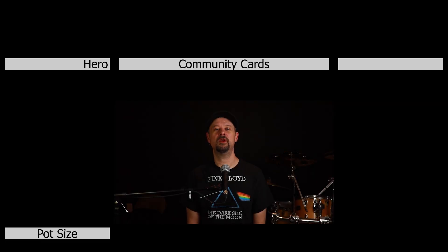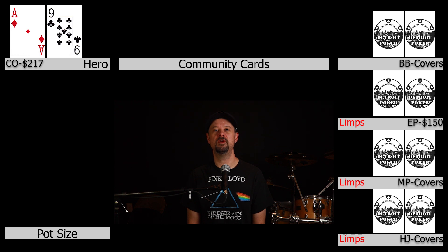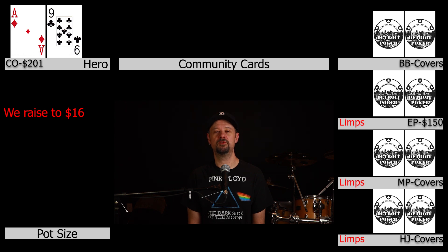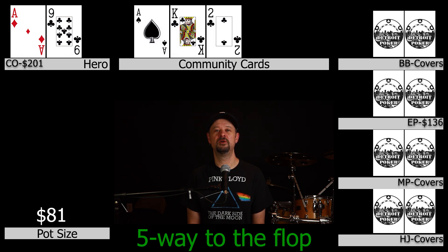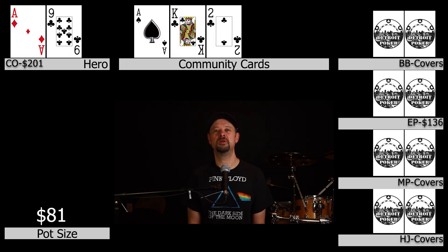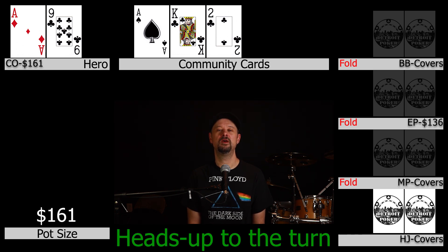Another 1/2 no-limit hold'em hand for comparison. Hero is in the cutoff with a $217 stack and gets dealt ace-nine offsuit. By the time action reaches us there are three limpers with varying stack sizes. We raise to $16 and the big blind plus all three limpers call. We go to the flop five ways. The flop comes out ace-king-two with two clubs and a spade. Action checks to us and we bet $40. It folds to the hijack who calls. He covers us and we go to the turn heads up.